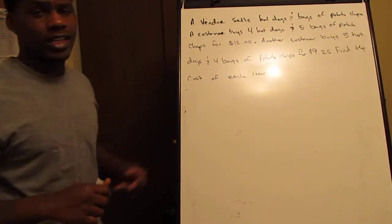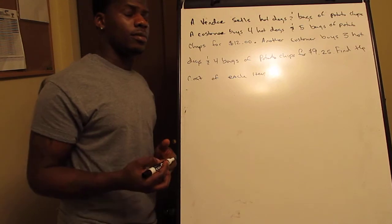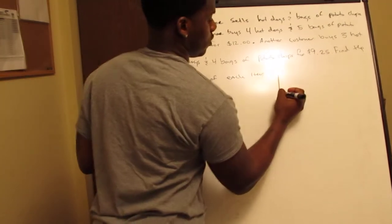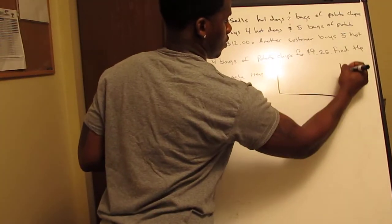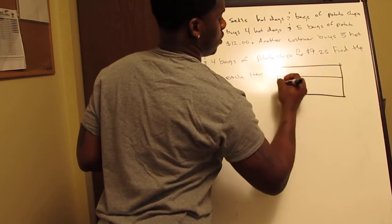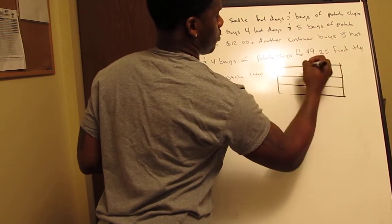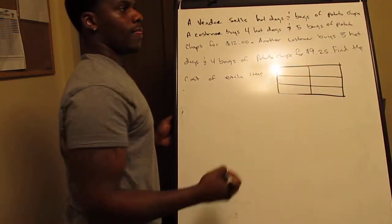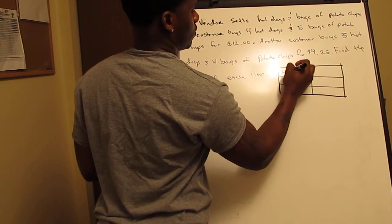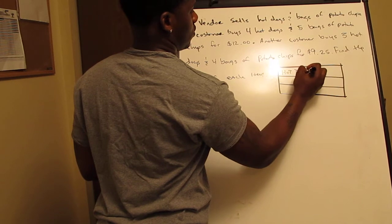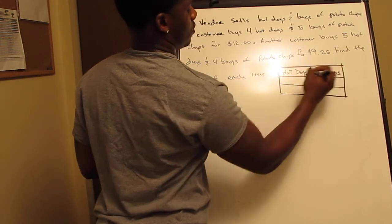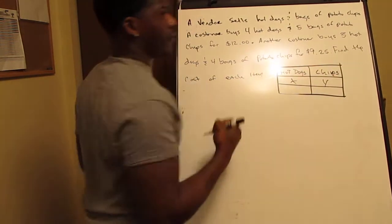First, we identify hot dogs and potato chips as our variables. I'll make a little chart here with two columns and three rows — hot dogs and chips, labeled X and Y.